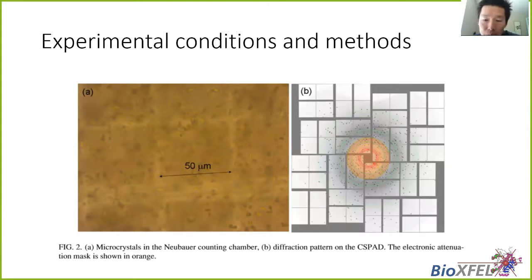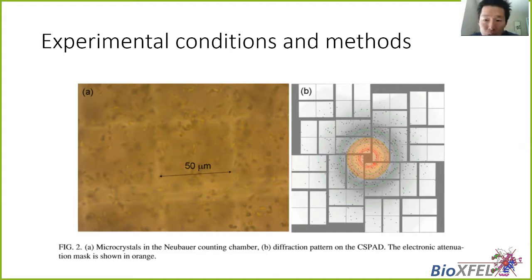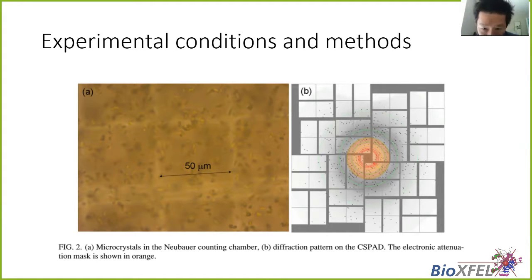This paper first briefly describes the experimental method used for the 2014 Science paper. The crystal size was about 5 micron by 2 micron, shown in Figure 2A of the paper. Figure 2B shows one of the diffraction patterns on a CSPAD detector used at the CXI. The center orange mask is the region of the CSPAD that was electronically attenuated by about a factor of 7, just to balance the intensity between low and higher resolution reflections so that the center part would not be saturated.